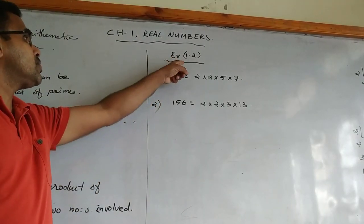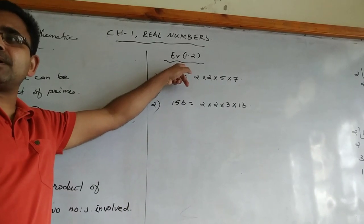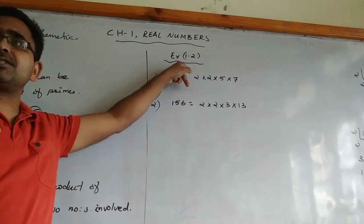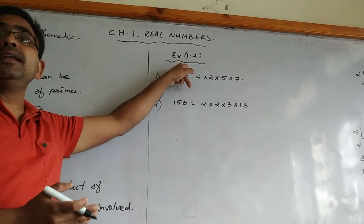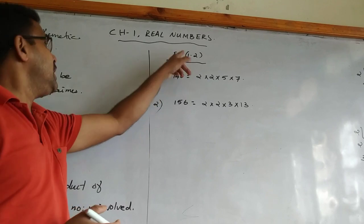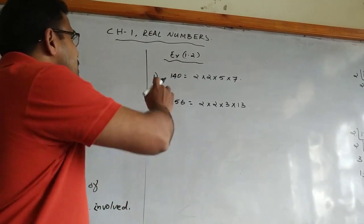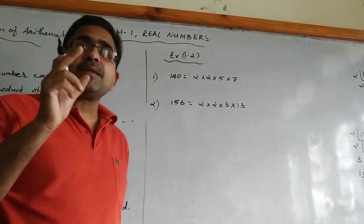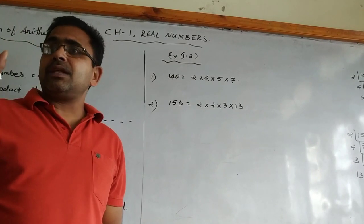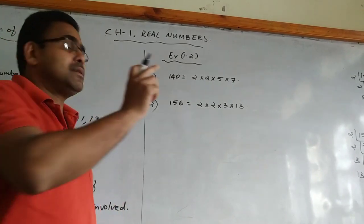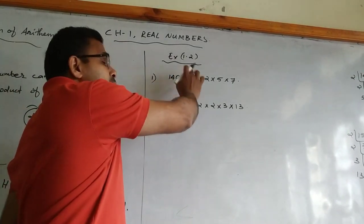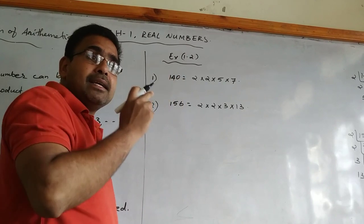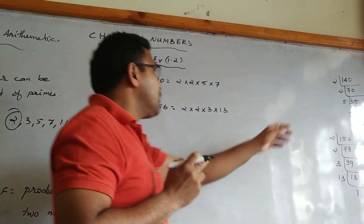Now we are coming to the first exercise, that is exercise 1.2. Why is exercise 1.1 not there? That is deleted. So we start with exercise 1.2. The first question asks us to prime factorize the given numbers. The first number is 140.